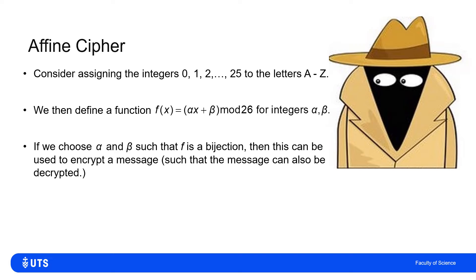Obviously every time I pass the same letter in, I want it to map to the same encoded letter. But I also want it to be a bijection because I want it to be decipherable. I don't want all of my letters to map to the same thing, in which case I couldn't know where it had come from. So I want to pick alpha and beta so that F is not just a function, but a bijection.